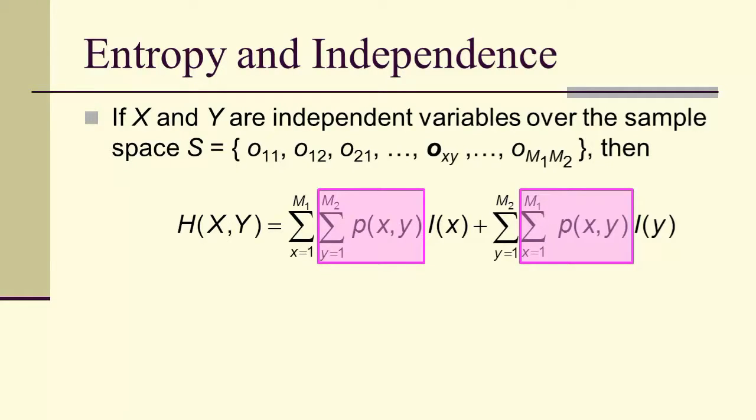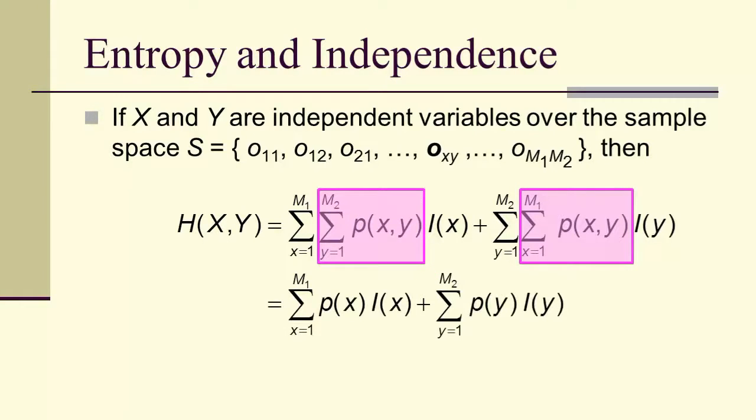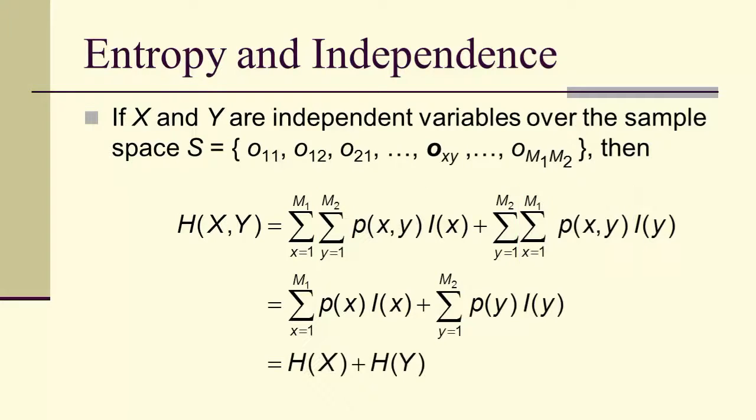And notice that summing over the y's gives us the marginal probability for x, and likewise for x we get the marginal probability for y. So we get p(x)I(x), p(y)I(y), and that's just the sum of the entropies.